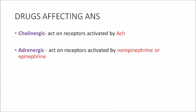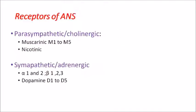Now let's go into drugs affecting the ANS. There are two types: cholinergic drugs and adrenergic drugs. Cholinergic drugs act on receptors activated by acetylcholine, and adrenergic drugs act on receptors activated by norepinephrine, epinephrine, or adrenaline. When you give cholinergic drugs, they activate the parasympathetic system; when you give adrenergic drugs, they activate the sympathetic system.